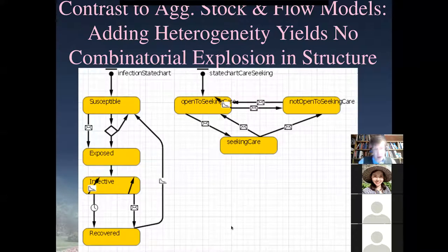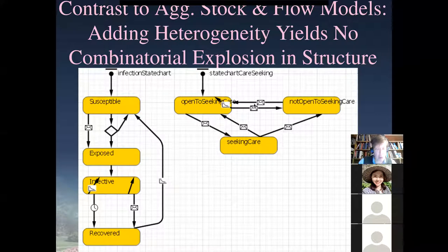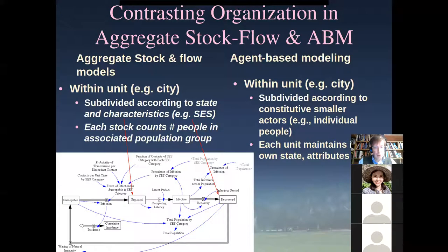Generally speaking, agents will have many types of semi-orthogonal evolving states — maybe with respect to infection, care-seeking, and mental health — all three evolving simultaneously in a way that's loosely coupled. What we see here is a situation where we've almost taken compartmental modeling and stood it on its head, as it were, per Hegel.